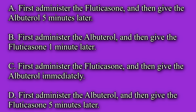A. First administer the fluticasone and then give the albuterol five minutes later. B. First administer the albuterol and then give the fluticasone one minute later. C. First administer the fluticasone and then give the albuterol immediately. Or D. First administer the albuterol and then give the fluticasone five minutes later.